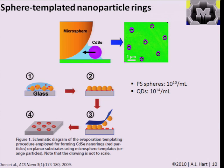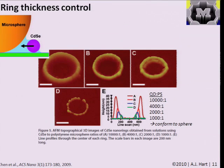By the magic of evaporative self-assembly—the drying and capillary interactions—the spheres assembled into a hexagonally packed layer, and the nanoparticles assembled into rings trapped underneath the microspheres. As the drying process occurs, it first pulls the microspheres together, then pulls the quantum dots underneath the spheres. After this evaporative assembly, they take tape, peel away the microspheres, and end up with quantum dot rings on the substrate. The concentration of spheres is about 10 billion per milliliter, and quantum dots are 1,000 to 10,000 times higher.